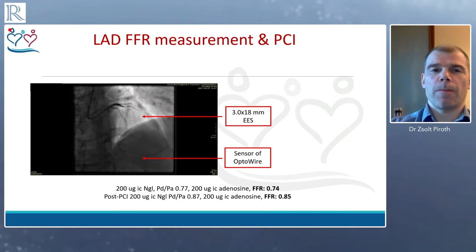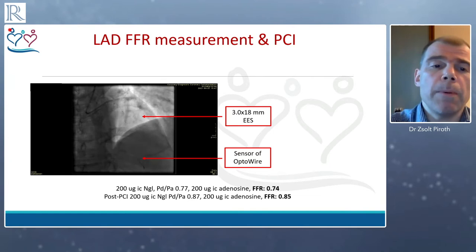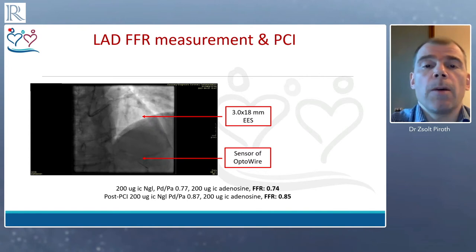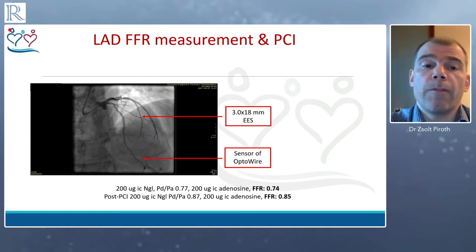Thank you. I would suggest going on with Joel's case and then we will still have plenty of time to discuss. What we did is used an Optowire 3. We placed it in the distal part of the LAD, gave nitro — that gave us a resting Pd/Pa ratio of 0.77, consistent with a hemodynamically significant lesion. But we were also keen to see the true FFR, so we gave IC adenosine as per local practice — 200 micrograms — and arrived at an FFR of 0.74.